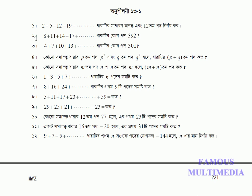Number two, number three — the series is 8 plus 11 plus 14 plus 17 plus dot dot dot, equaling 392.